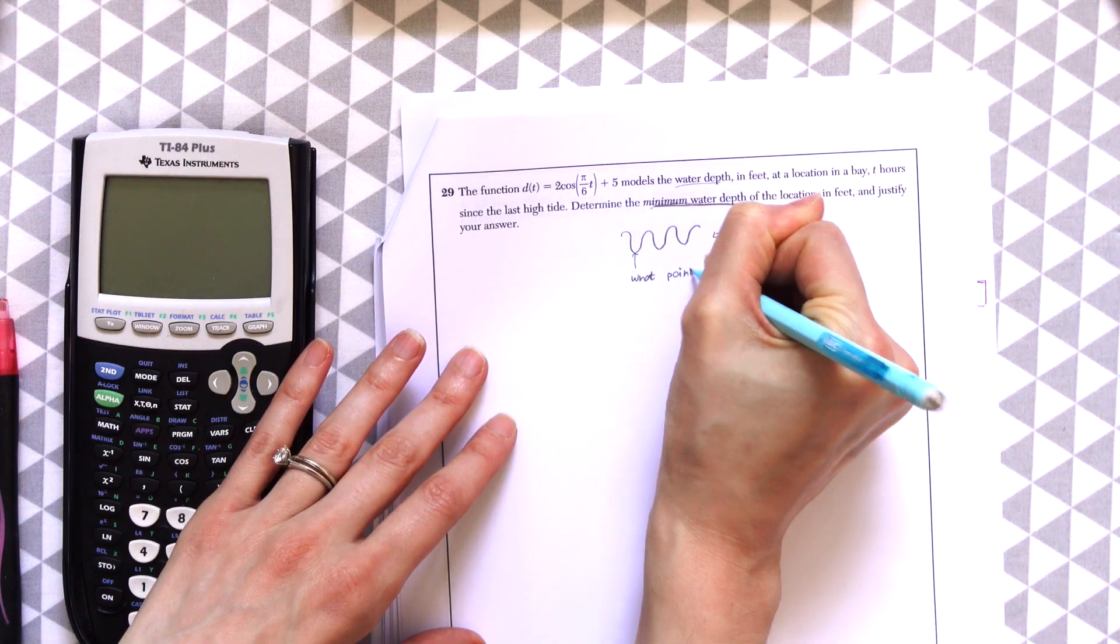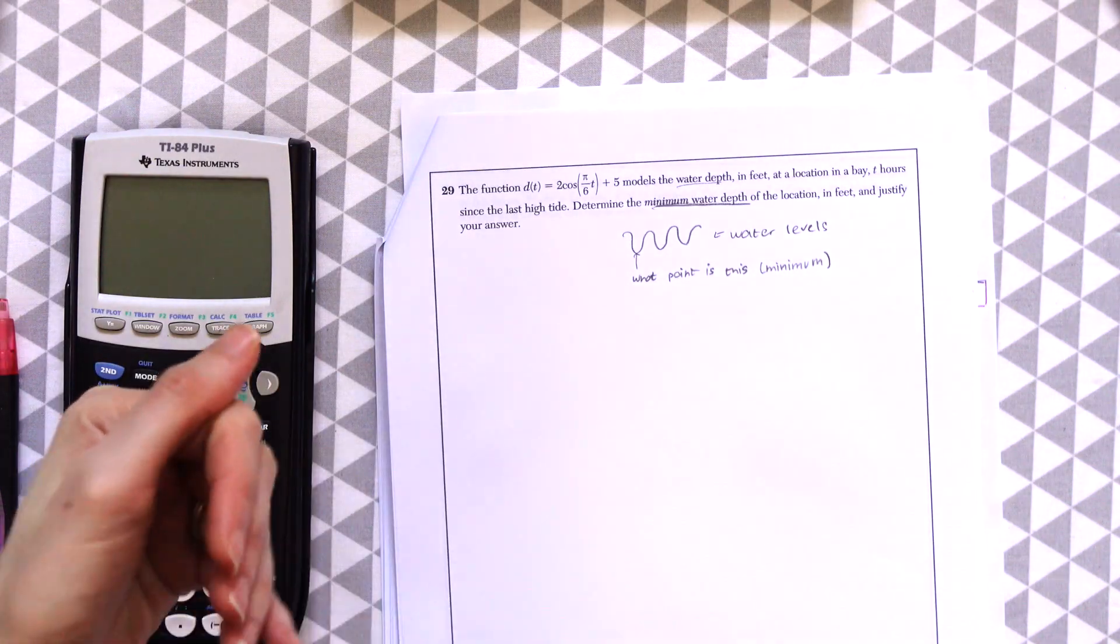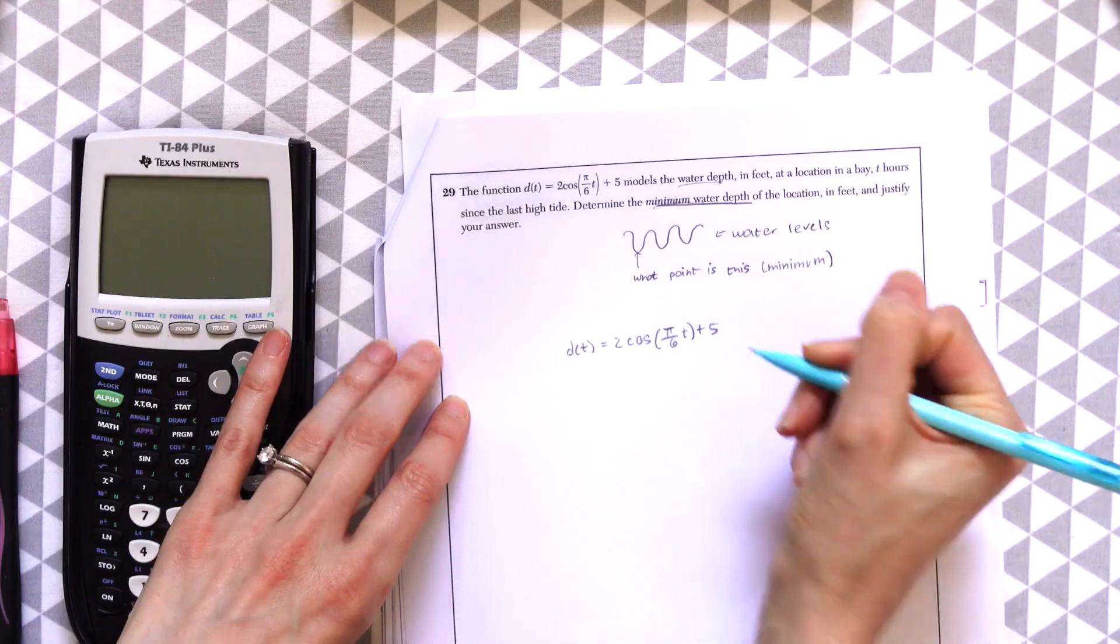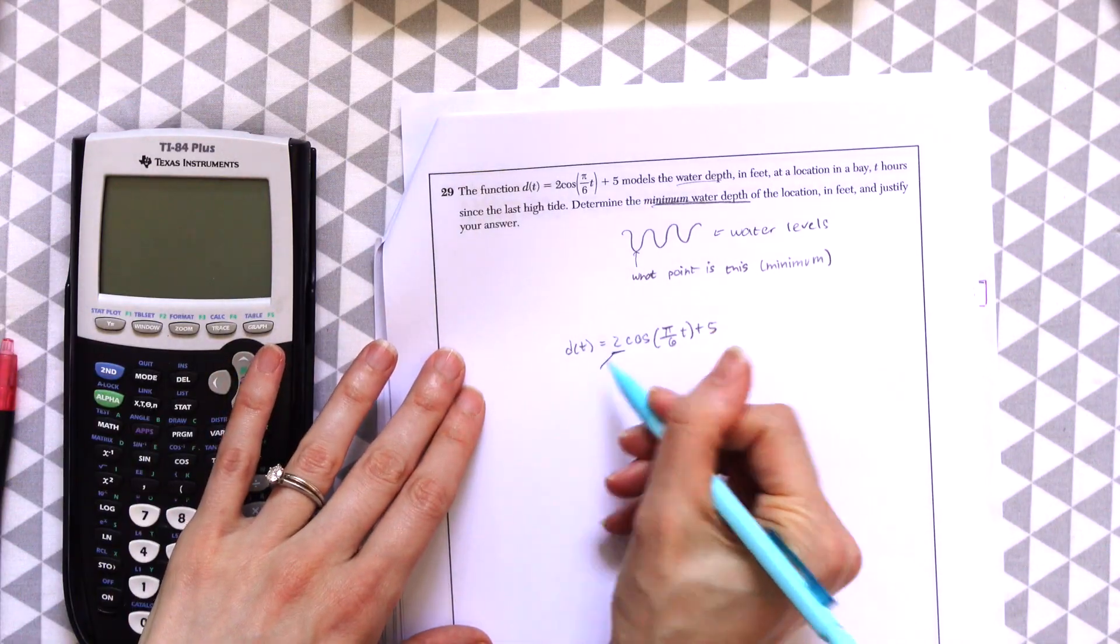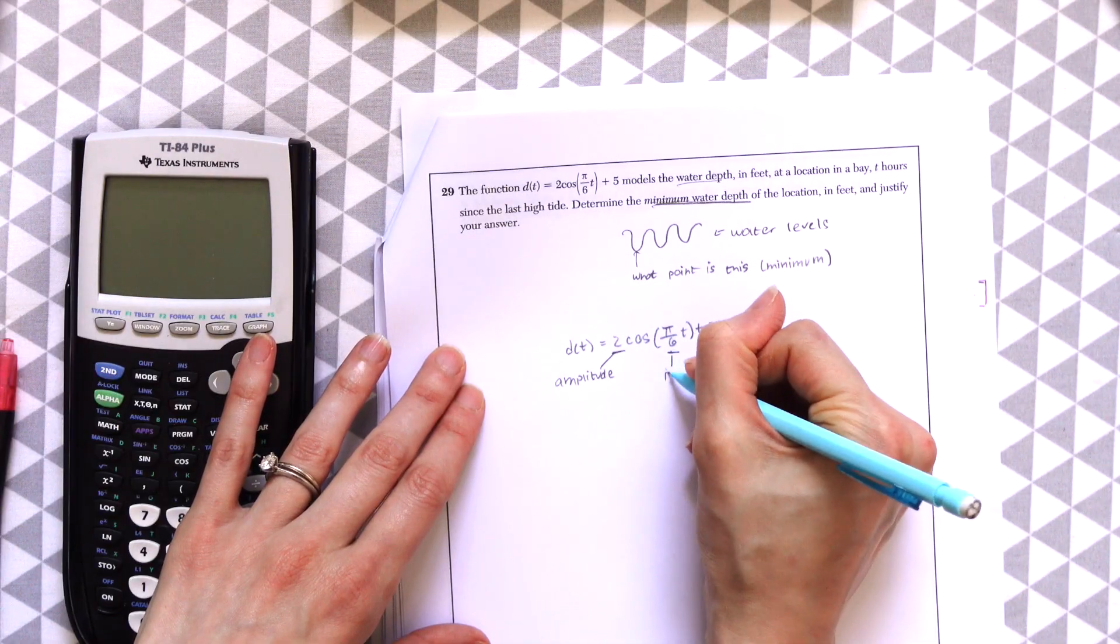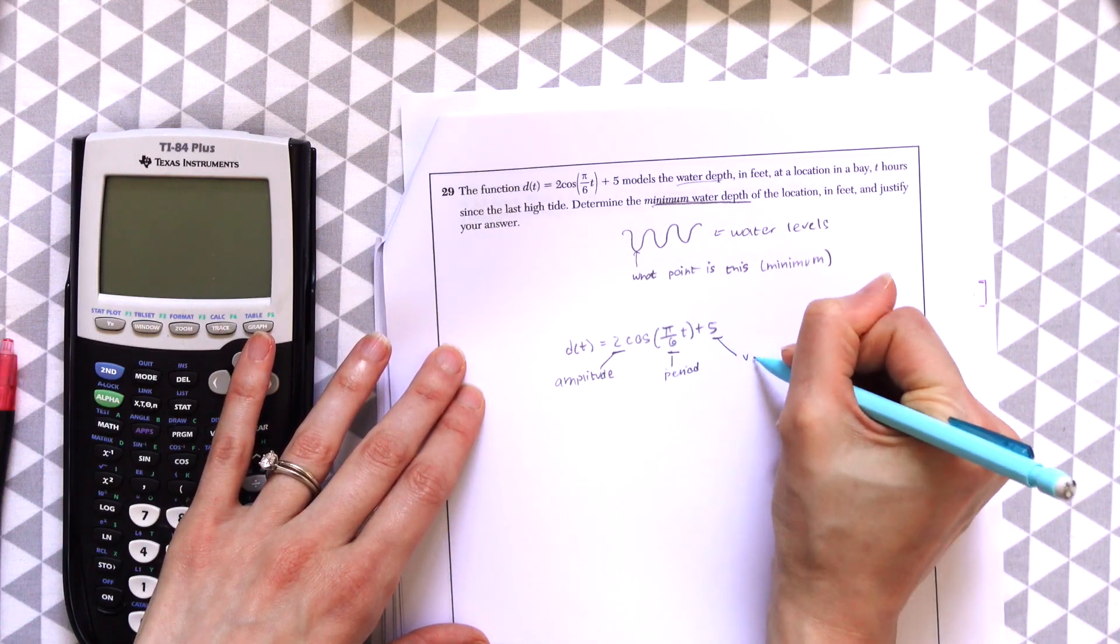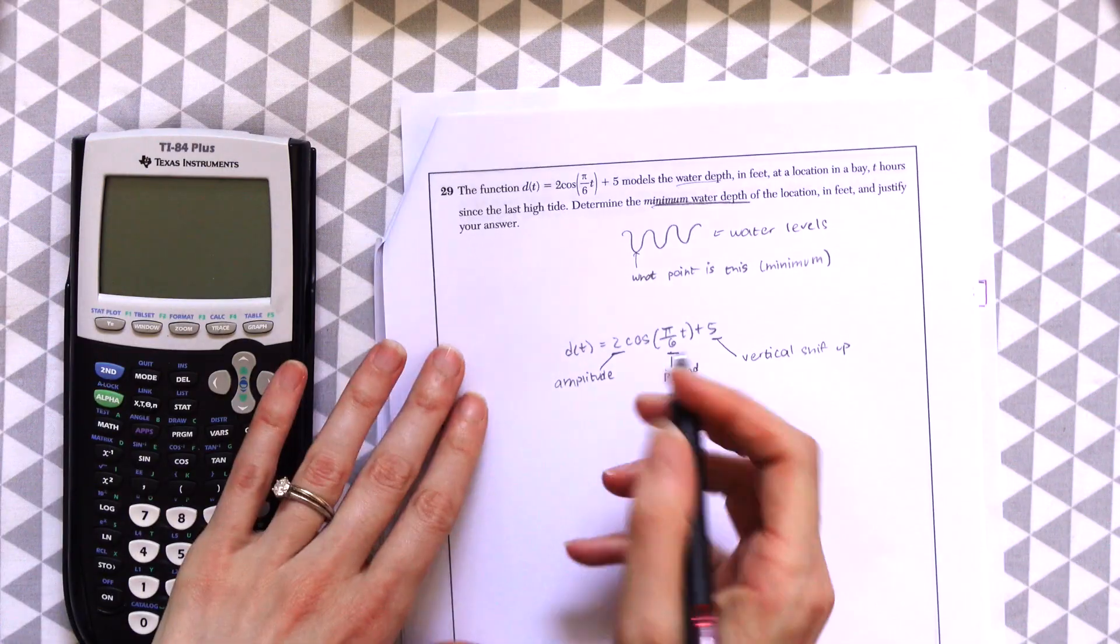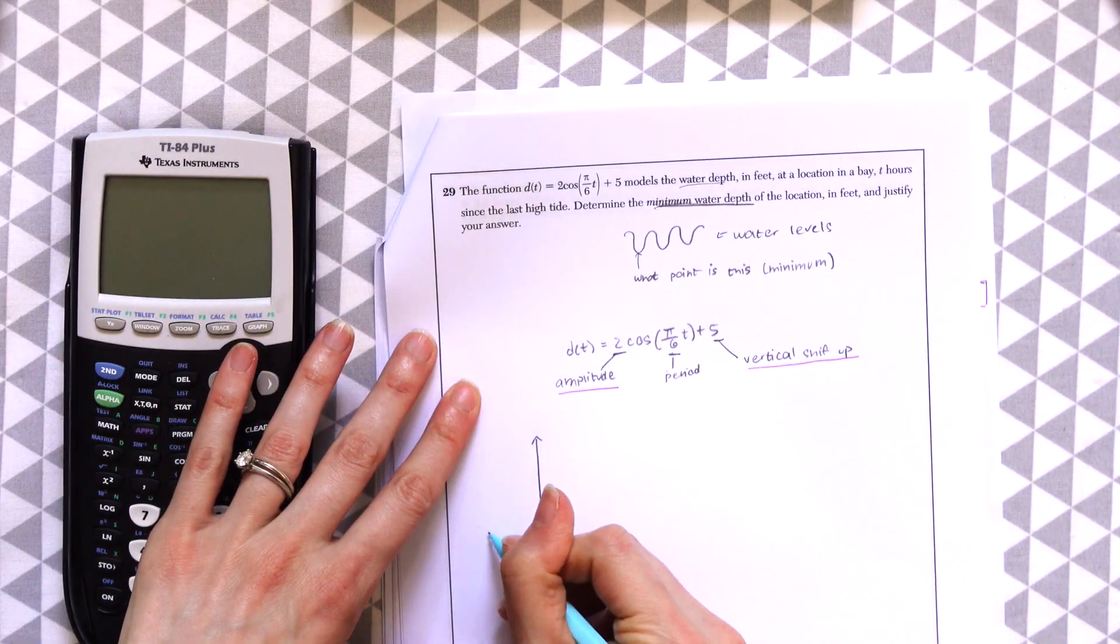So now we can take a look at our trig function. Just a reminder of the different parts of a cosine function. There's this 2, this represents the amplitude. And then this represents the frequency period. We're actually not going to really need that for this question. We're going to be paying attention to the amplitude and then this number over here, which is the vertical shift up. So we're going to be focusing on the amplitude and the vertical shift up.